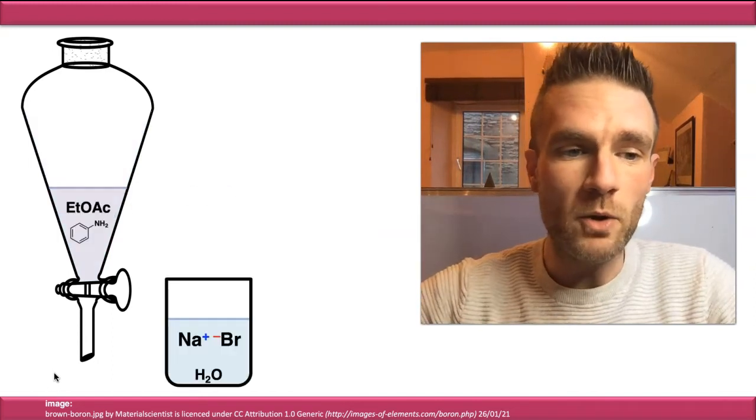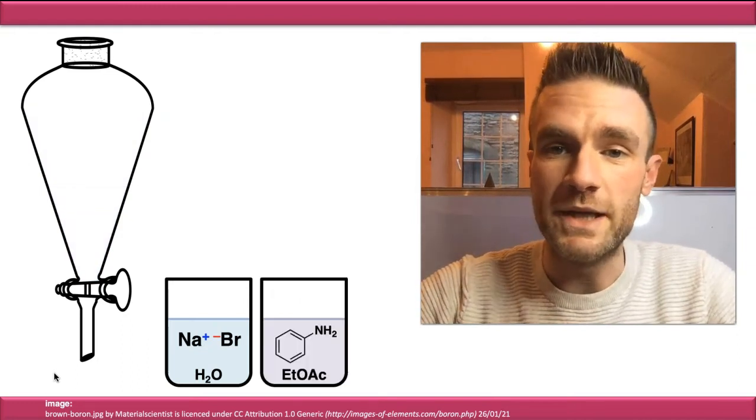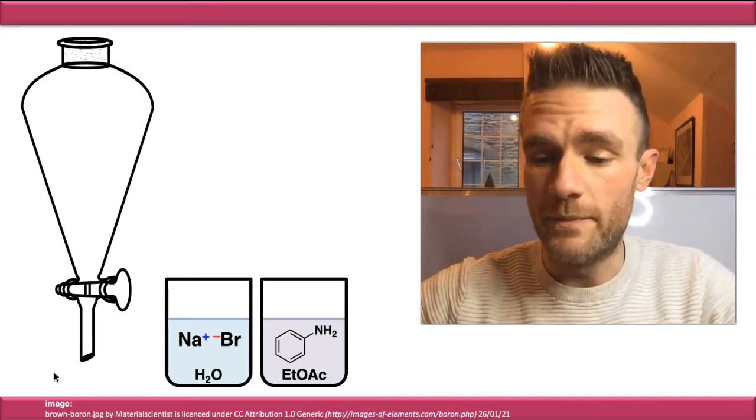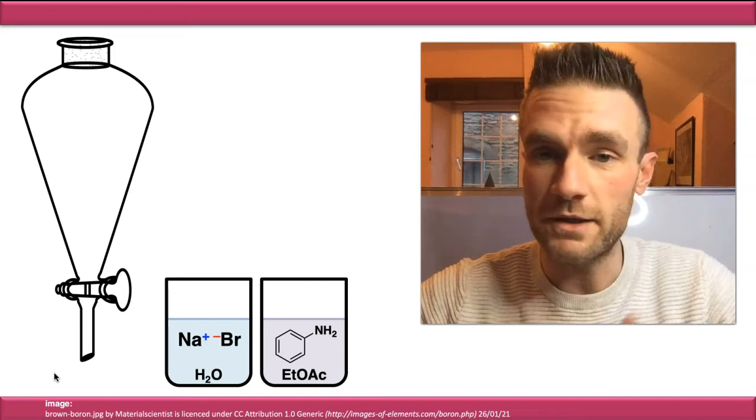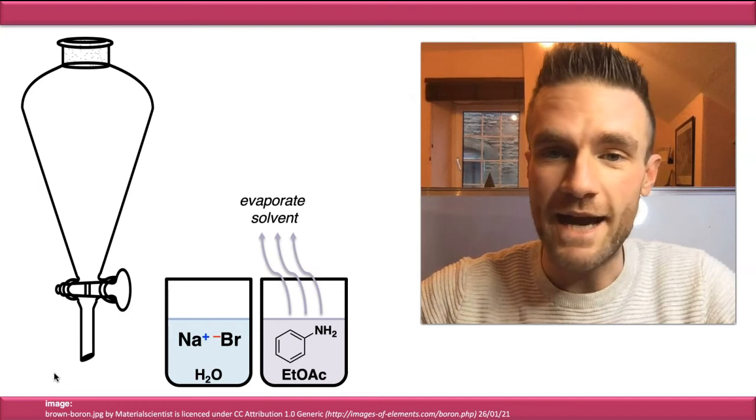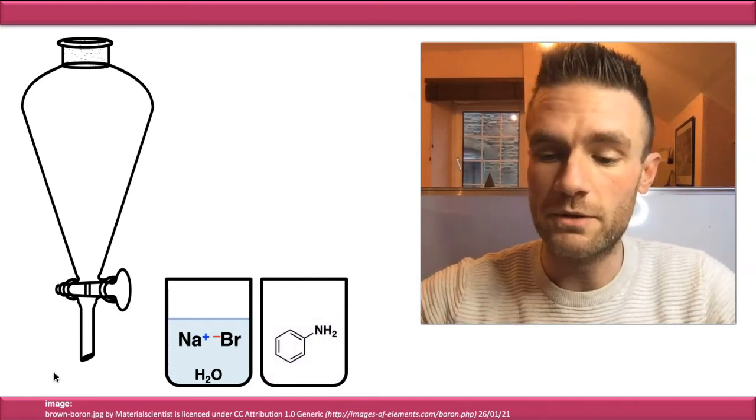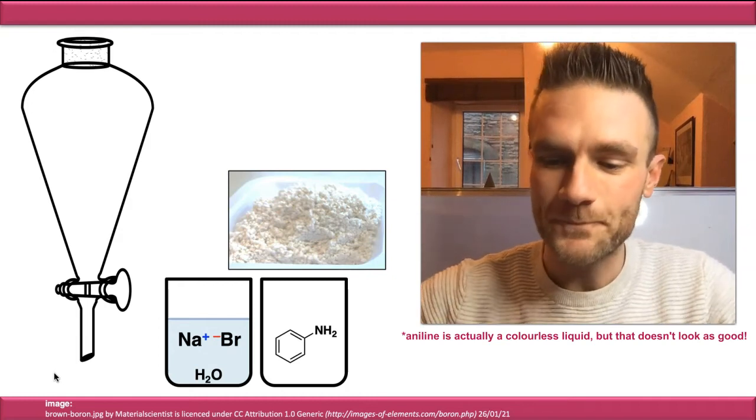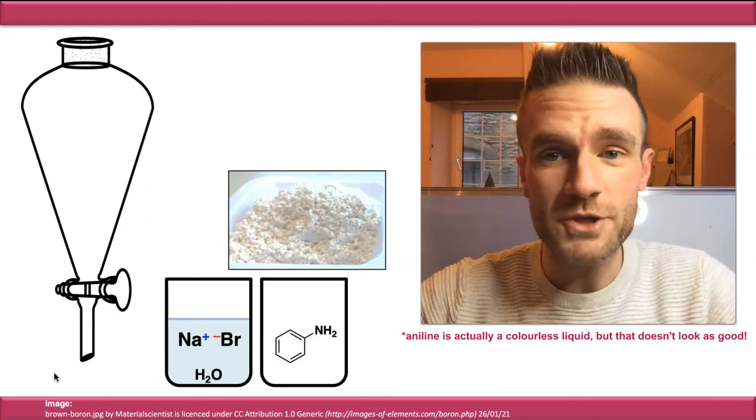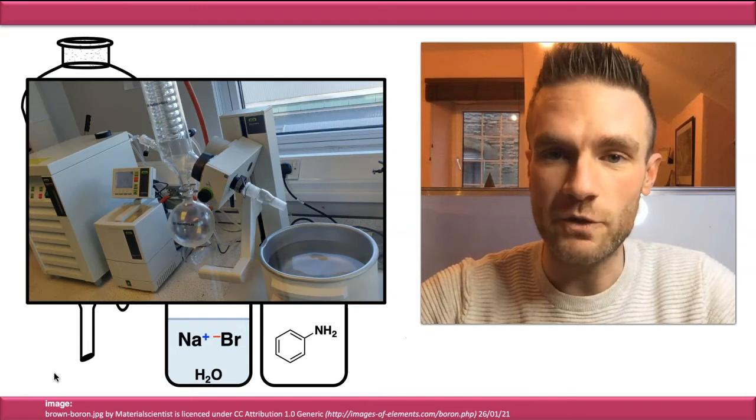Now, if you pour out from the separating funnel through the tap at the bottom into some beakers, you've then separated these two compounds out. Now, the benefit of using organic solvents here is that many of them are volatile and ethyl acetate is as well. So what we can do with the organic fraction is we can allow that solvent to evaporate and therefore isolate our pure, nice white powder in this case, our pure organic compound. If you're thinking that's going to take hours and you're going to have to sit there waiting for this organic solvent to evaporate, we have a kit that allows you to do it in a matter of minutes.